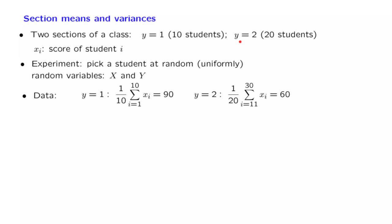We are given some information. For the first section, the average of the students' scores is 90. For the second section, the average of the students' scores is 60. Given that information, what is the expected value of the student's score? Well, each student is equally likely to be picked, so has probability 1 over 30 to be picked, and this multiplies the score of the student. So this is the expected value of the random variable of interest.